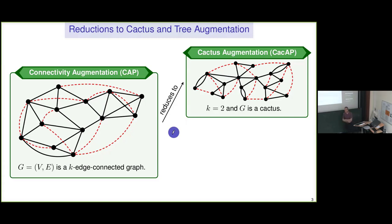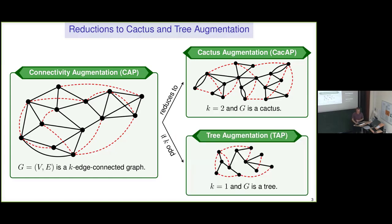There was a question about whether this reduction also works for the weighted case — yes, it also works for the weighted case. It's also an important point: we can reduce the problem, and maybe reduce it once more, to an even simpler case, at least the unweighted version. It simplifies a lot of things if you think about the special case instead of the original one.